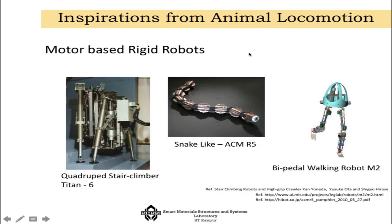The question is where we are going to use this kind of electroactive polymer — why is it so important in robotic development? One very important application is in locomotion or generation of locomotive forces. Looking at the transition from motor-based to motorless locomotion: starting from motor-based rigid robots like the quadruped stair climber Titan 6, snake-like SEM R5, bipedal walking robot M2, and Asimov robots — all are driven by servo motors or brushless DC motors.